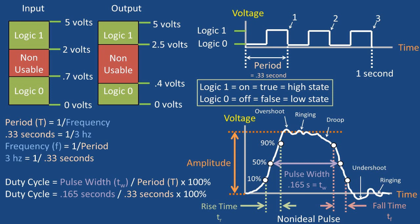To finish off this video, let's use the pulse width along with the period to find the duty cycle. The duty cycle is the ratio of the pulse width over the period of the waveform times 100%. So if we plug in our 0.165 second pulse width with our 0.33 second period, we get a duty cycle of 50%.